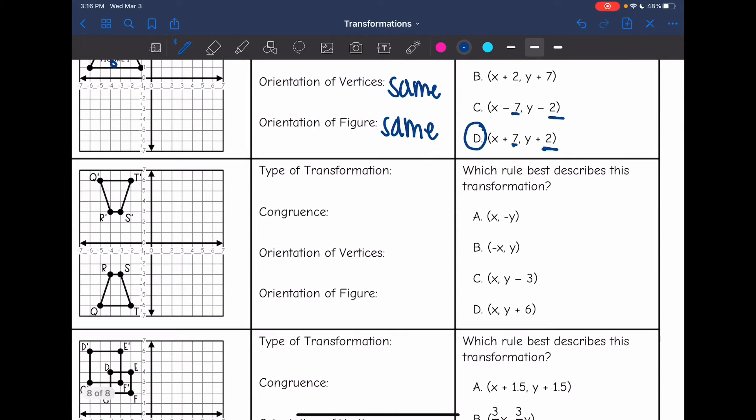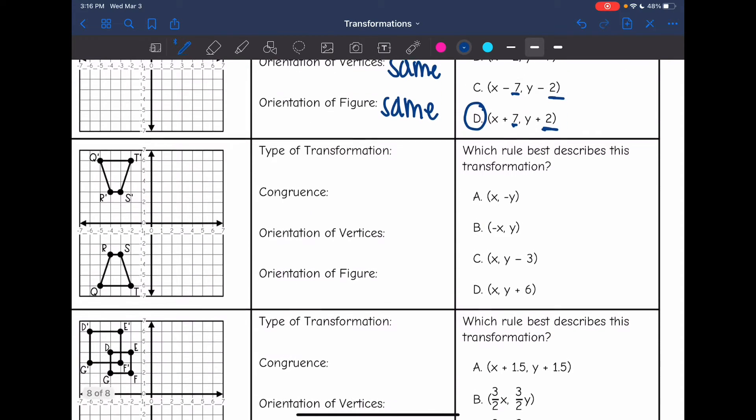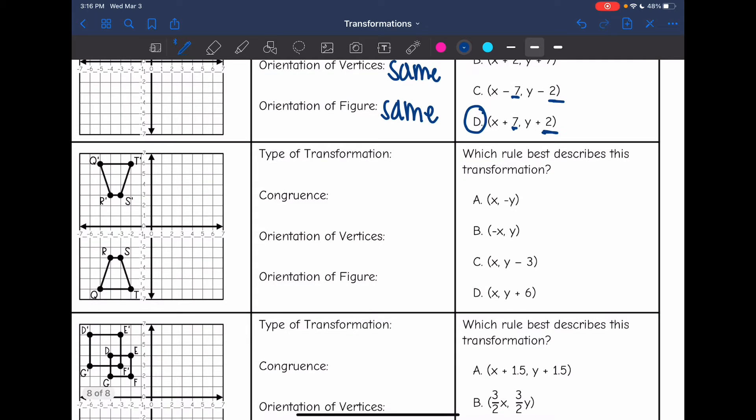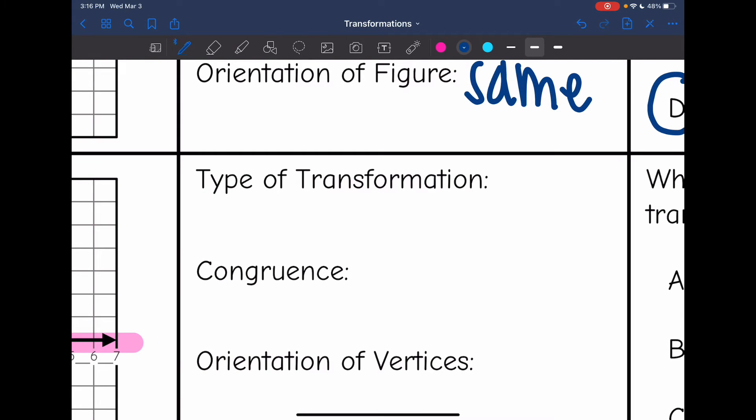Okay, let's look at this next transformation. This one looks like a flip over a line of reflection. And it looks like the line of reflection is the x-axis. So this one is a reflection over the x-axis.